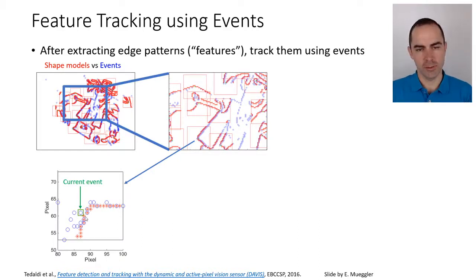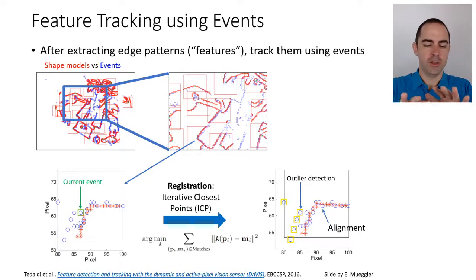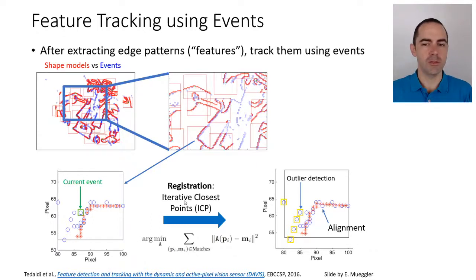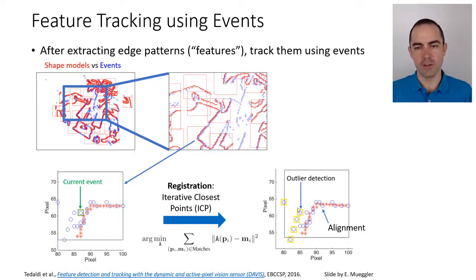The first key ingredient is data association — matching the event to a point in the shape model. The second is the update step: once association is done, how do we update? The goal is to place the model shape on top of the data shape by minimizing the Euclidean distance between the two point sets. This is done using the Iterative Closest Point (ICP) algorithm, processing multiple events at once. The model is aligned with the events, and events that don't agree well with the alignment are classified as outliers and discarded.